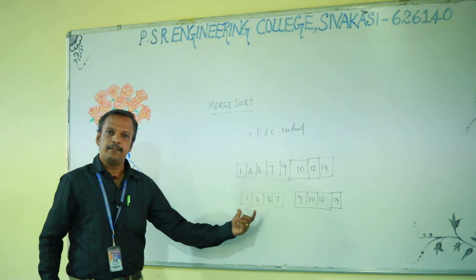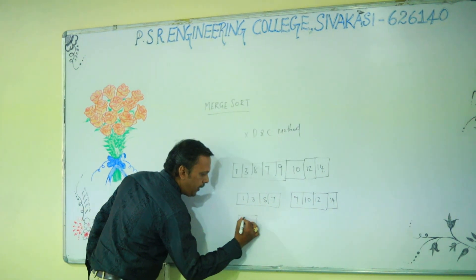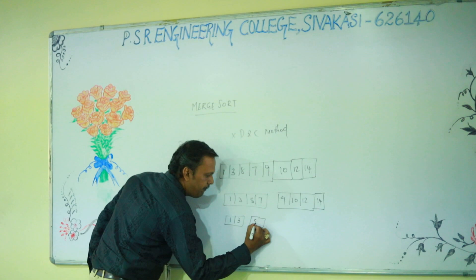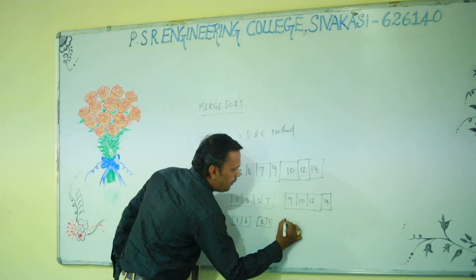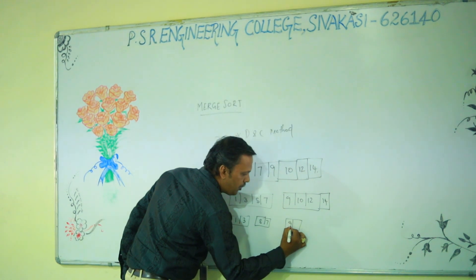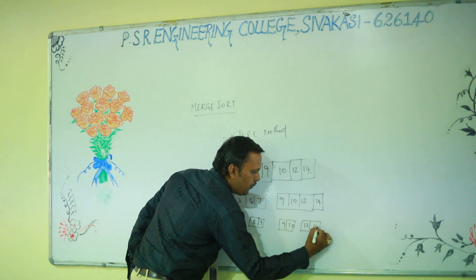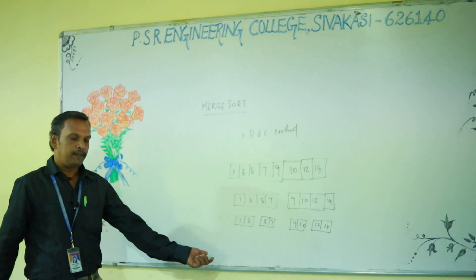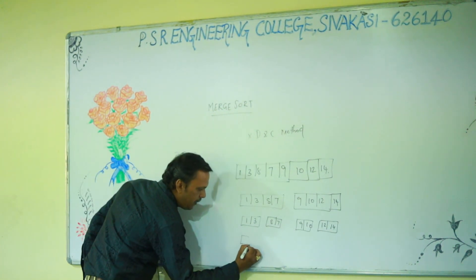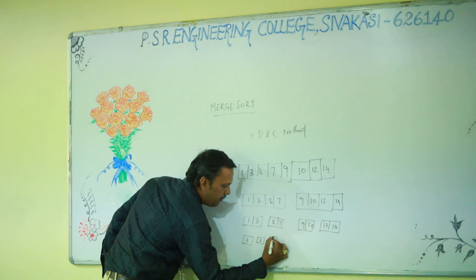Again the list is very large, so that is why we split that array again. So we have 1 and 3, and 8 and 7. Here again the right half list is also large, so 9 and 10, and 12 and 14. Again the list is large, so we split that array into each element separately.